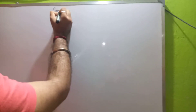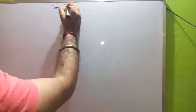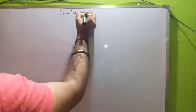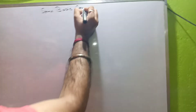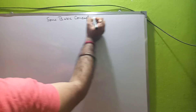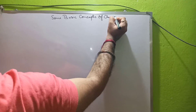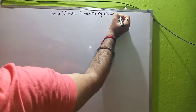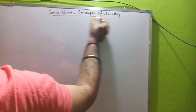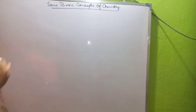Today students we are going to discuss the next part of the chapter — some basic concepts of chemistry. In my last video I discussed all the laws of chemical combination. Today we will be discussing Gay-Lussac's law of gaseous volumes.